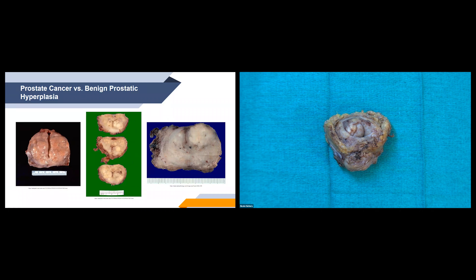These images show different gross appearances for prostate cancer and benign prostatic hyperplasia in a radical prostatectomy specimen. The cut surfaces show: first, BPH with diffuse nodules; second, a specimen with a blue background showing prostate cancer with an obvious mass; and the central photo showing a specimen with both prostate cancer and BPH. This illustrates how difficult it can be to distinguish between the two, which is why we submit many samples from these specimens.